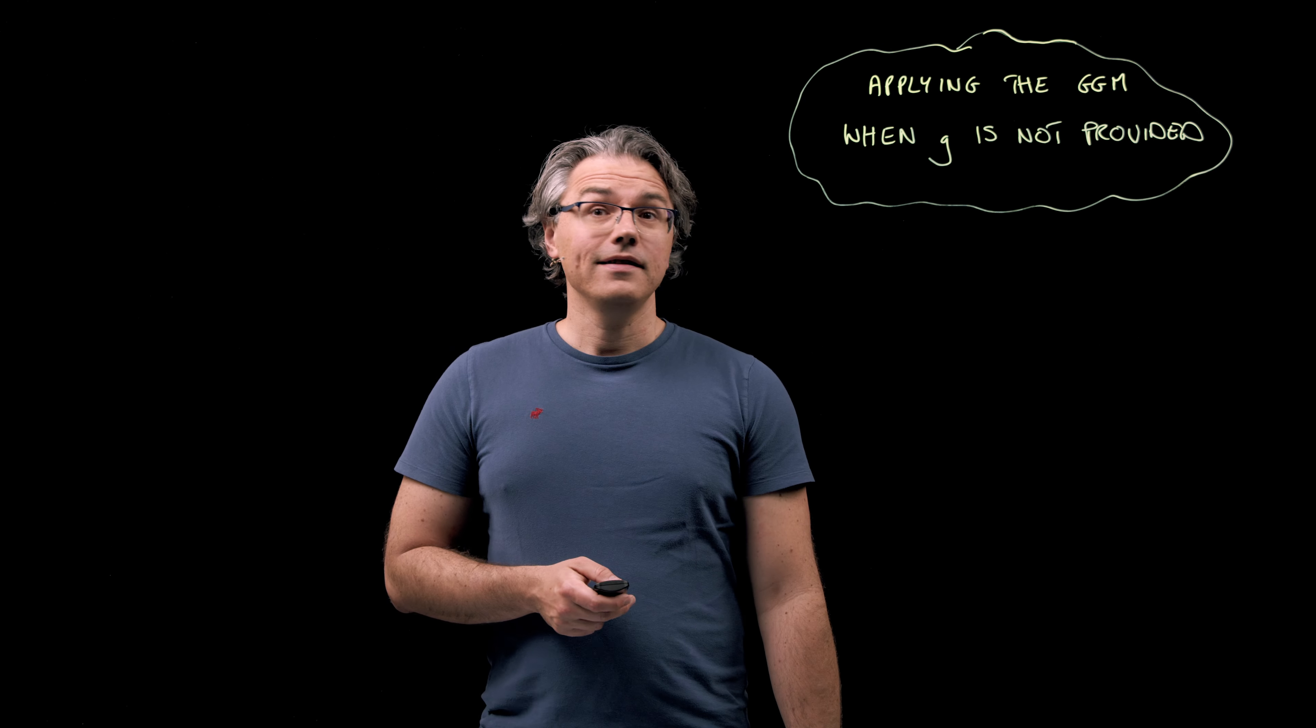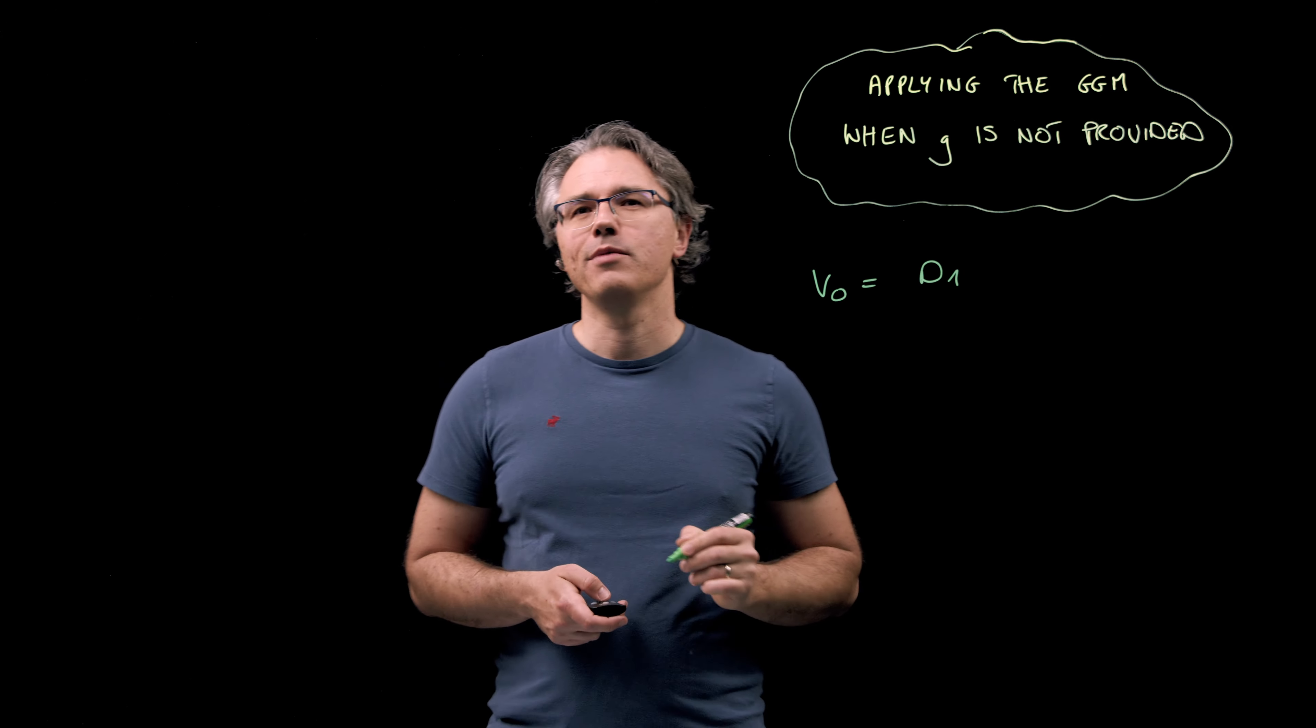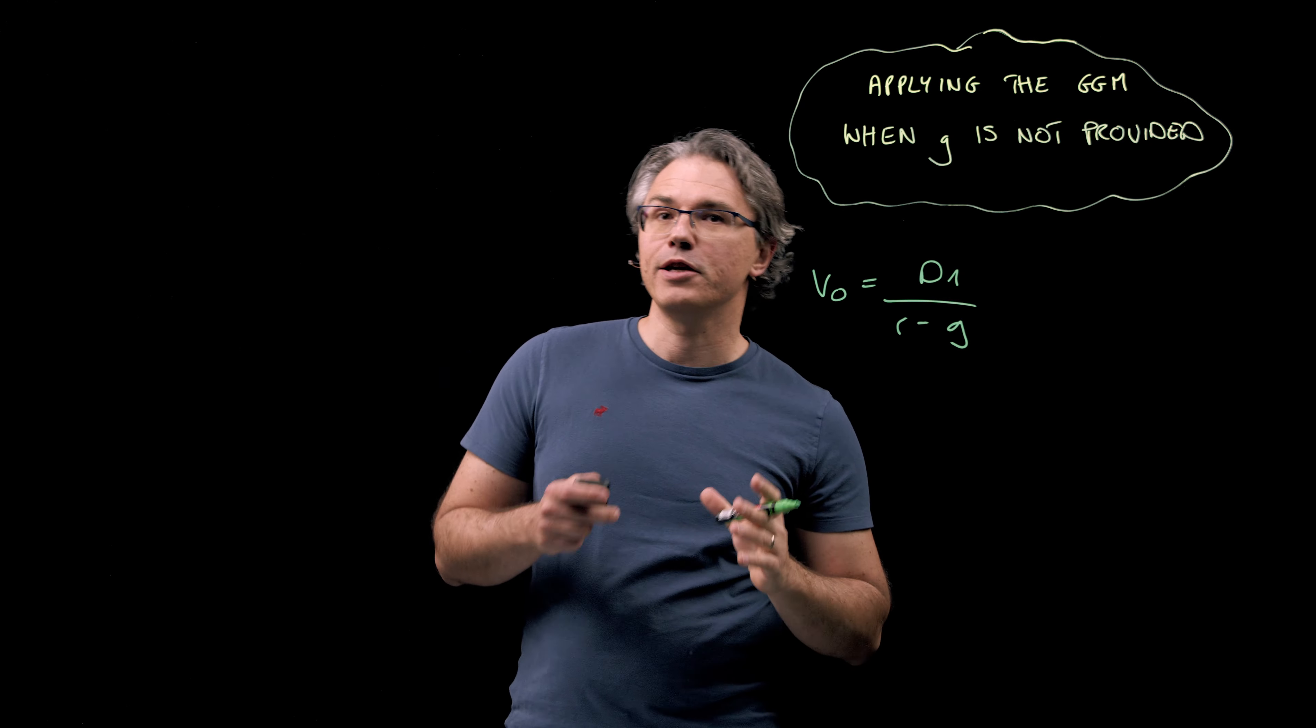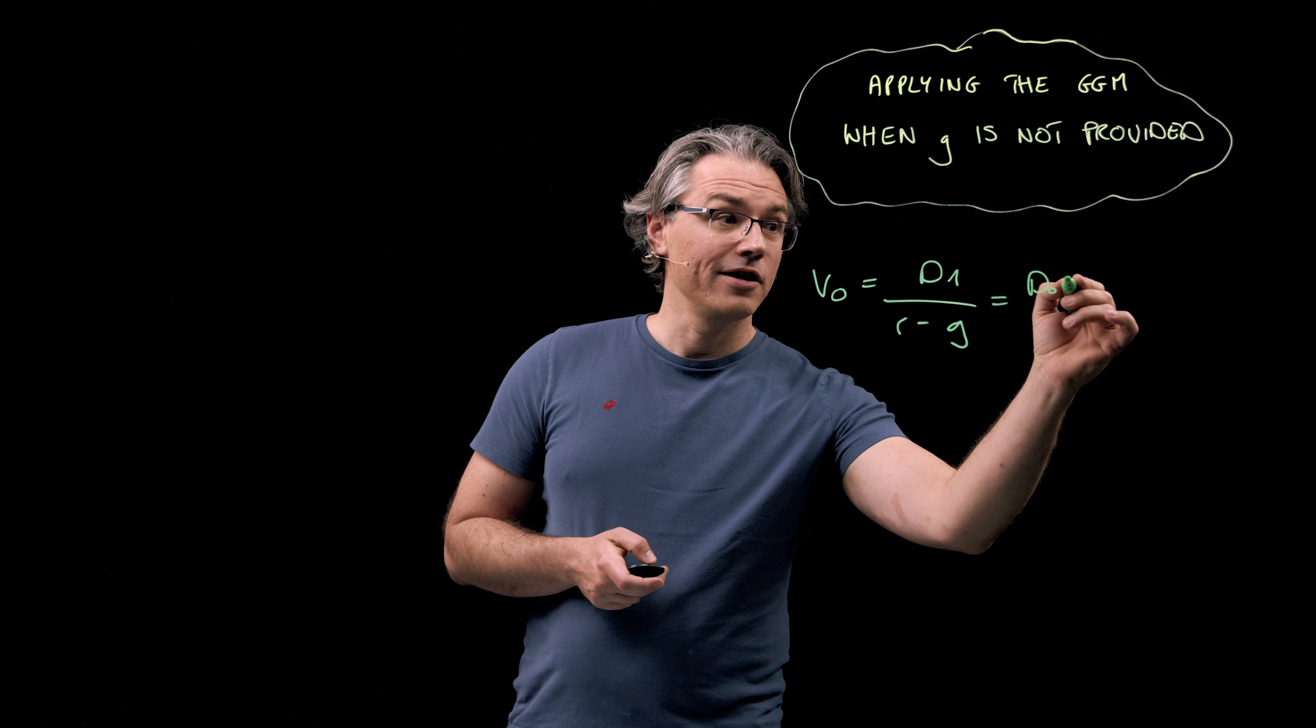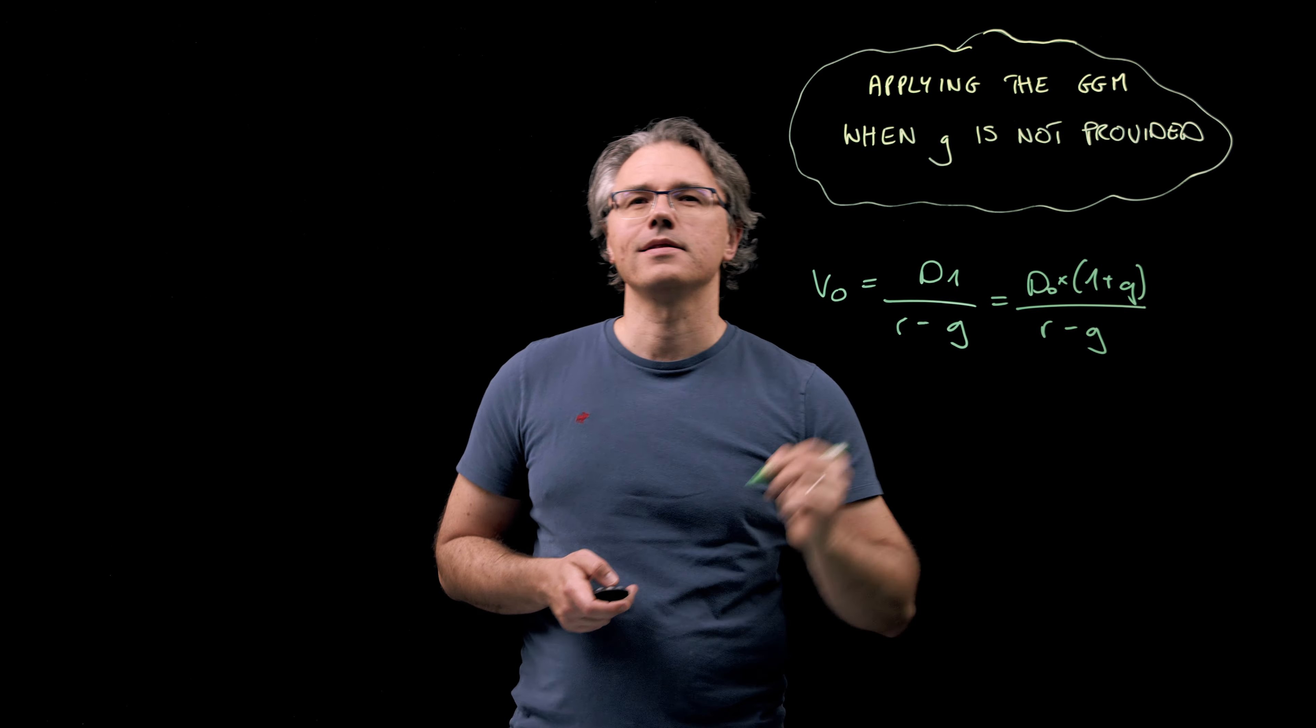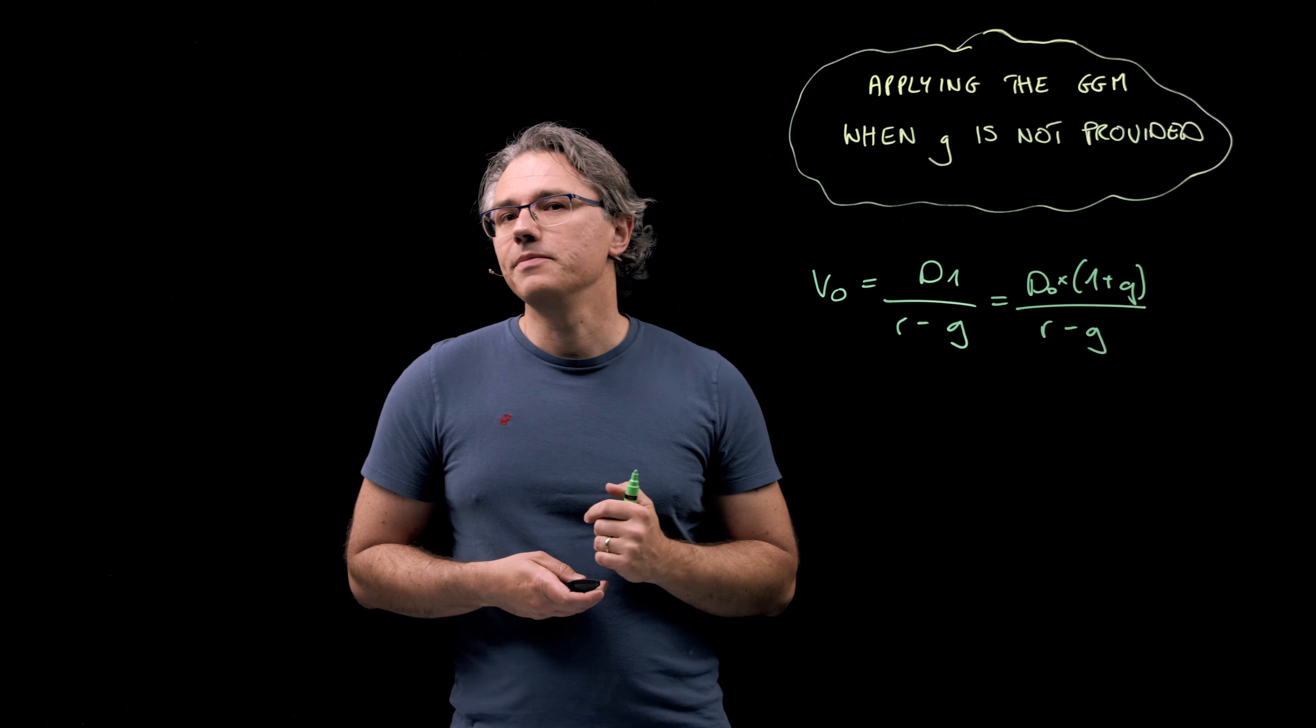I'm guessing that you already know the Gordon growth model formula for the value of a share at time zero, but let's write it down anyway. V0 equals the dividend at time one divided by R minus G, where R is the rate of return required by investors and G is the constant dividend growth rate. And we may also rewrite this as D0 times (1 + G) divided by (R - G), which allows us to express next year's dividend as a function of D0, the dividend which has just been paid.